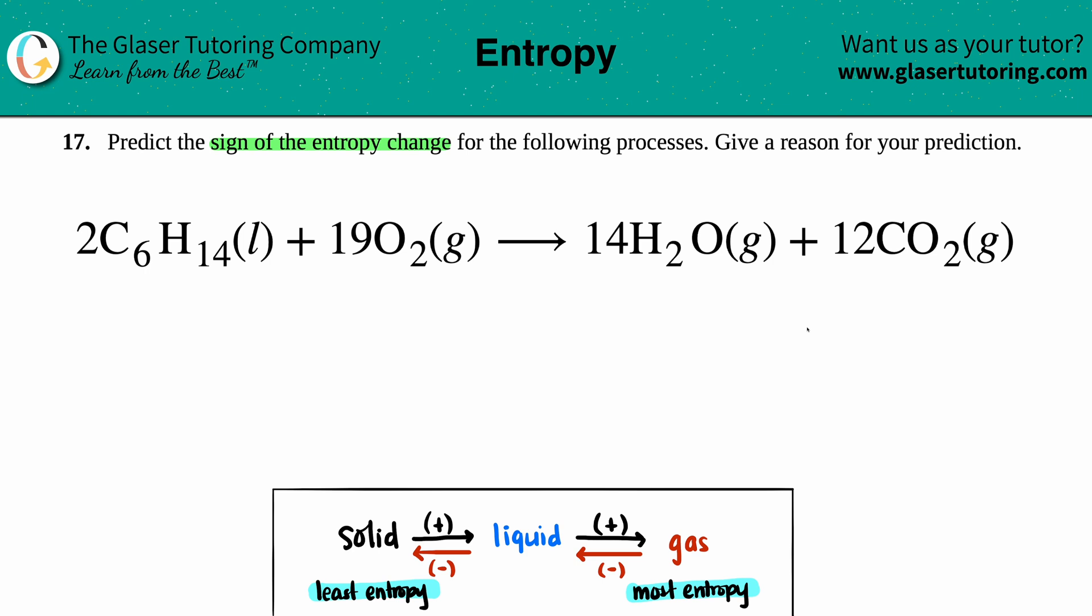I will definitely put the sign, but we'll just talk through it, otherwise the video would be 20 minutes long of me just writing. Anyway, let's go for it. We need to find the sign of the entropy change for a given balanced equation. In this case, they give us 2C6H14 liquid